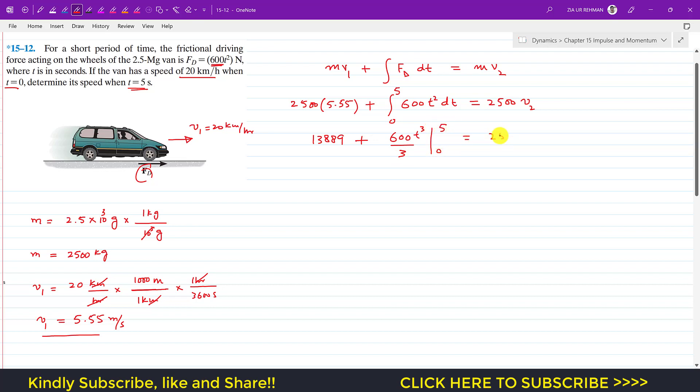This equals 2500v₂. And 600 divided by 3 is 200. So this is 200. If we put these limits, that will be 5³ minus 0³.